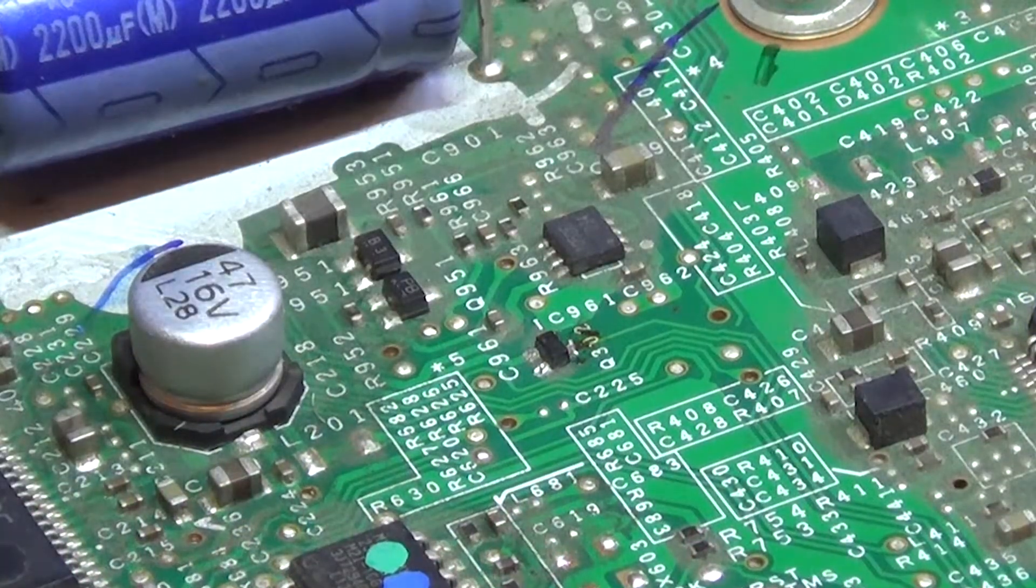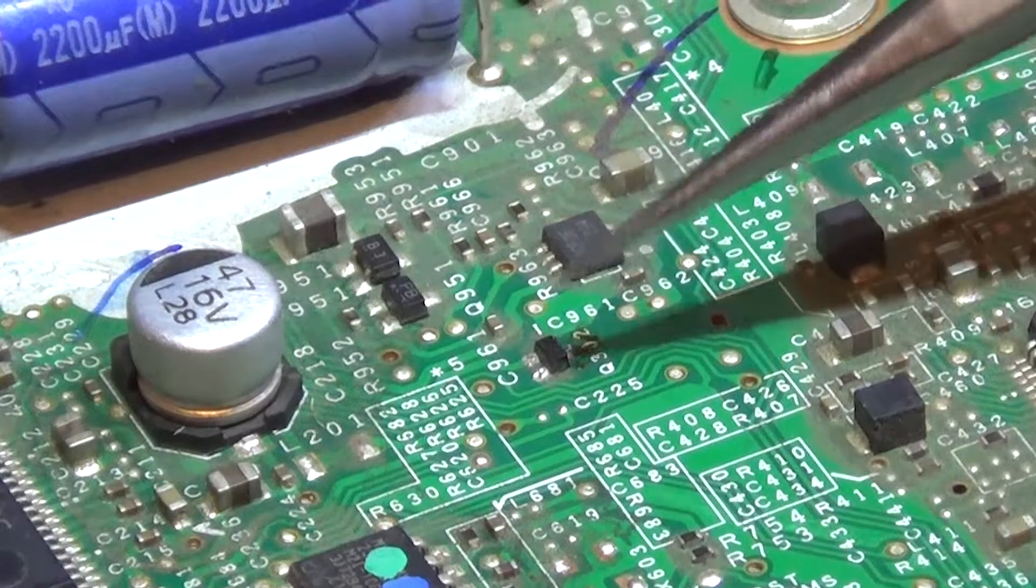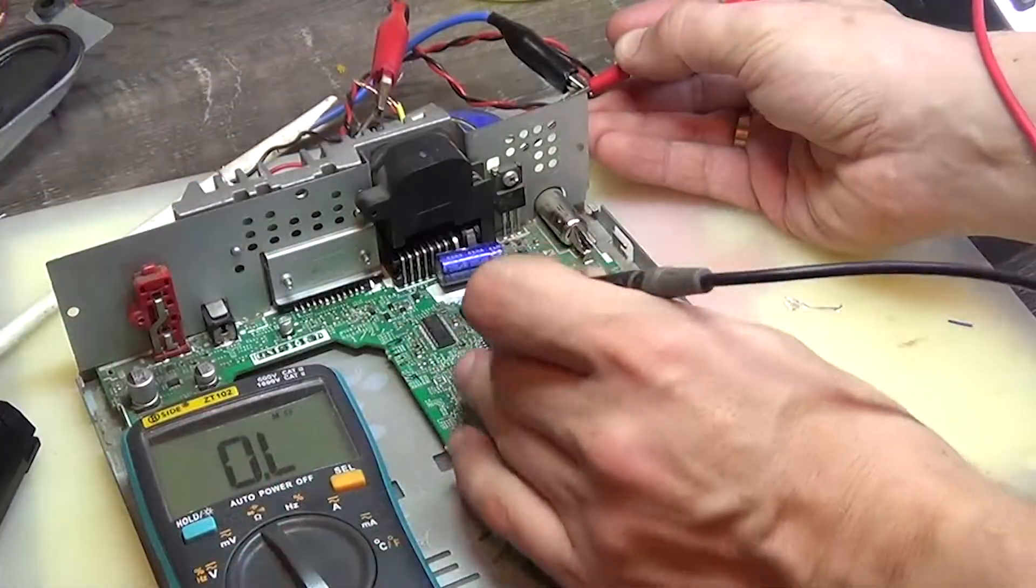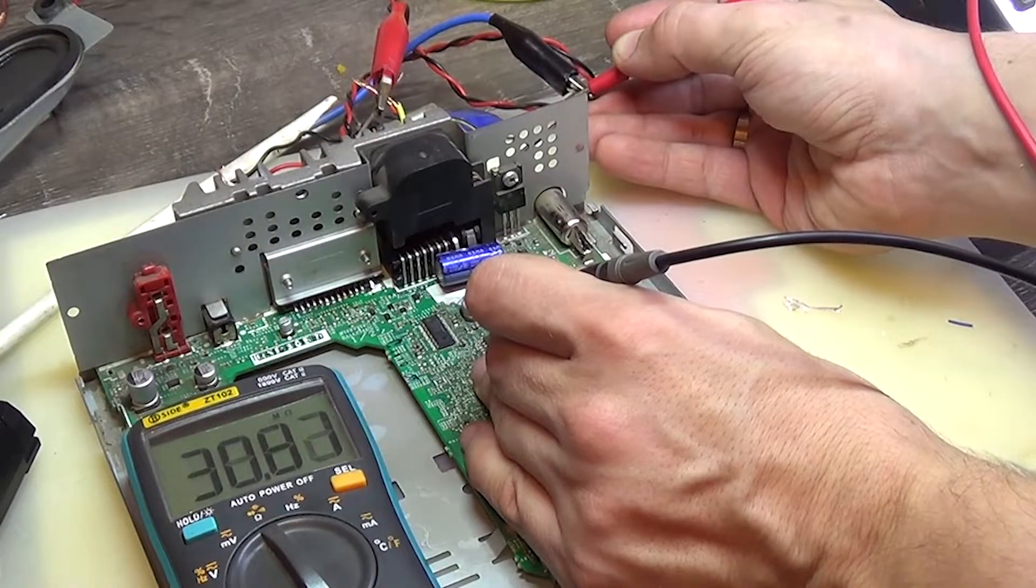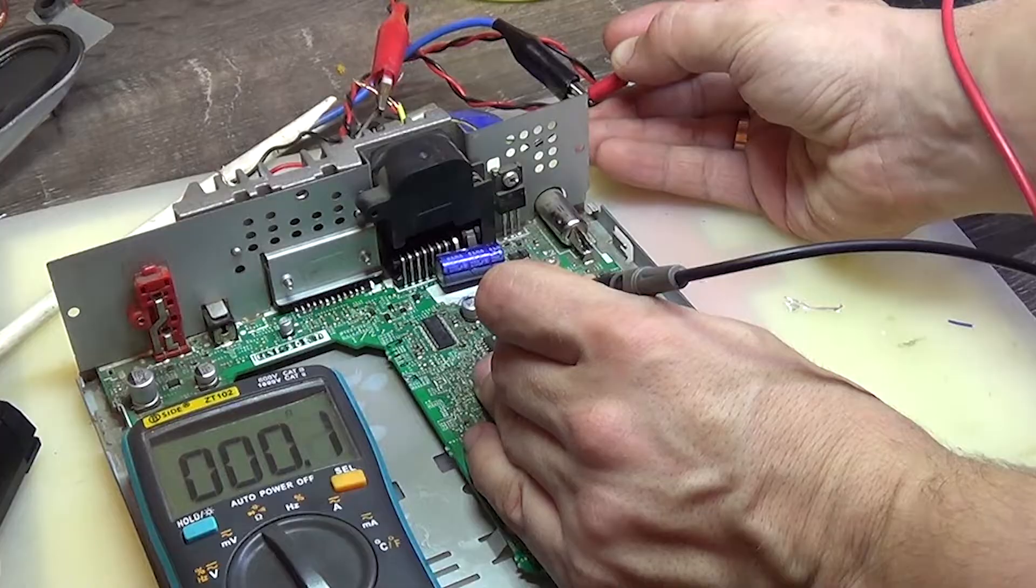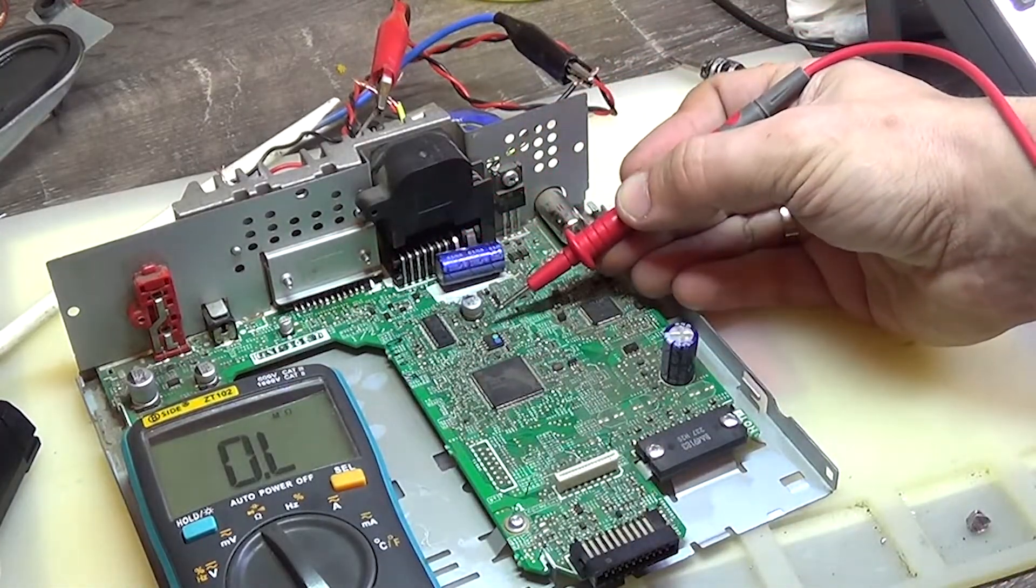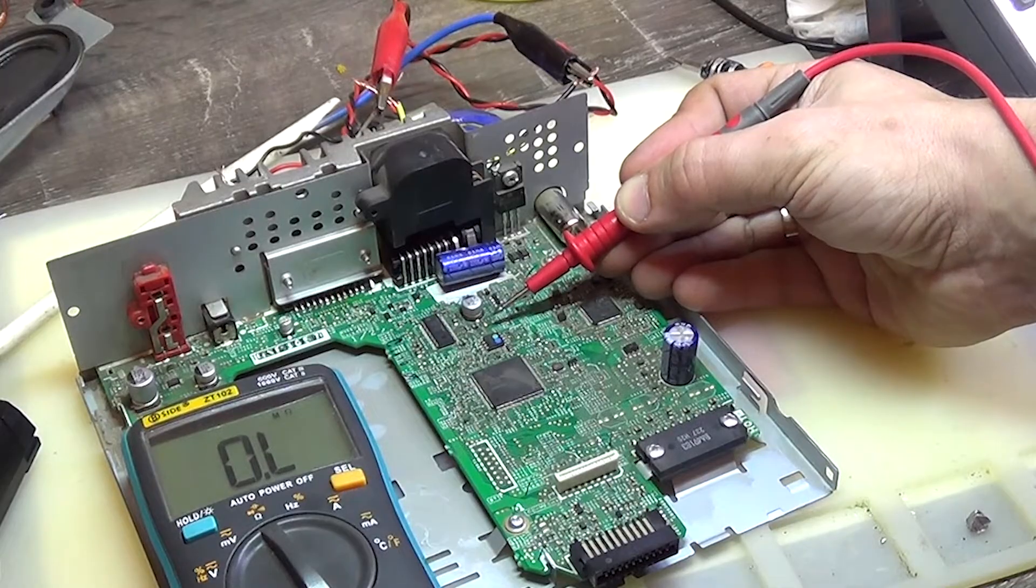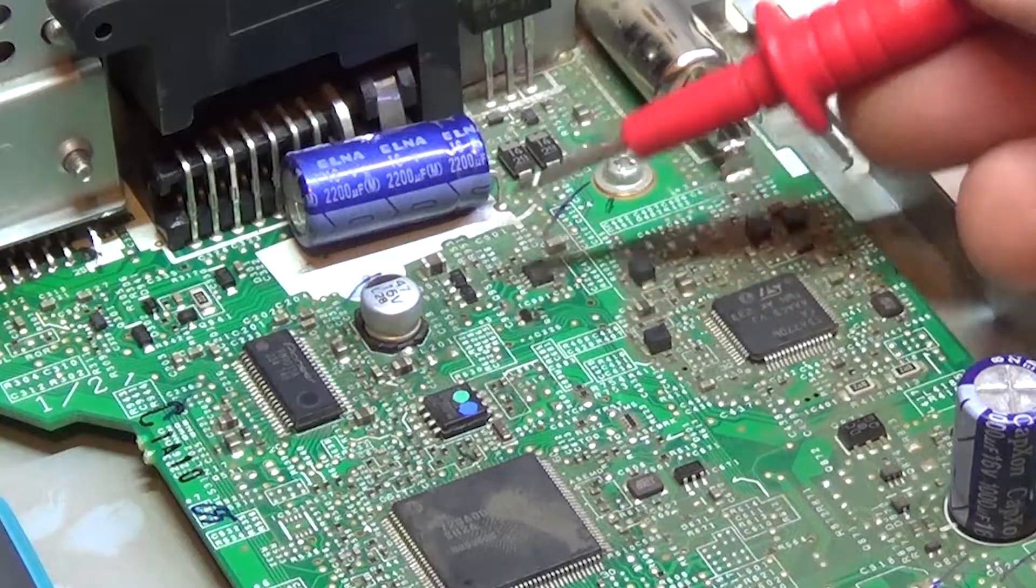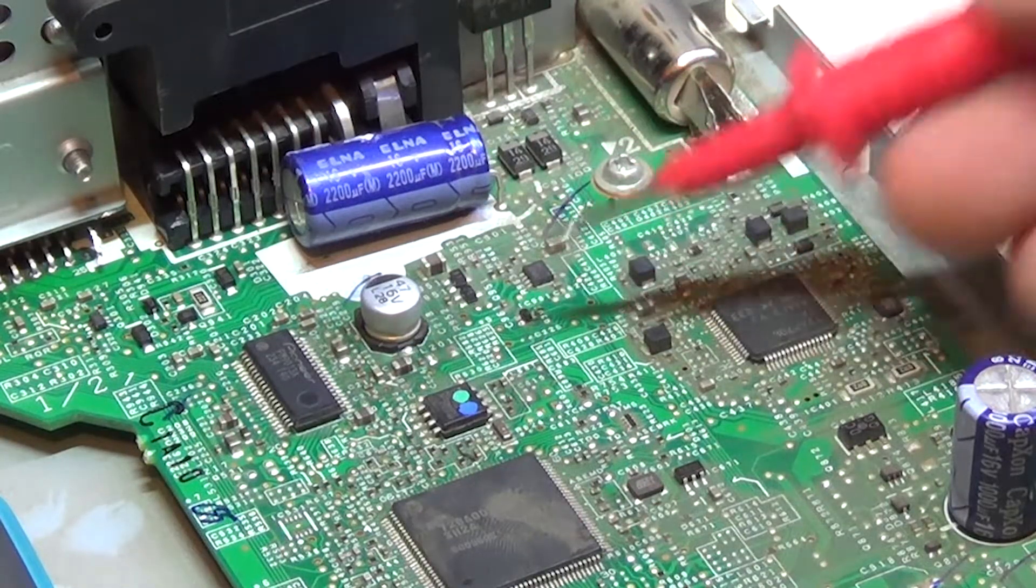Find the small transistor number Q302 and jumper its collector to the emitter or to the minus of the power supply. I'll connect to the emitter, which has zero resistance with the case. Pin 25 is connected to the base of this transistor through a 10 kilo-ohm resistor. There are different ways to do it - you can connect the collector and minus power supply with a wire, or put a small jumper between the collector and the emitter, which I'll do now.